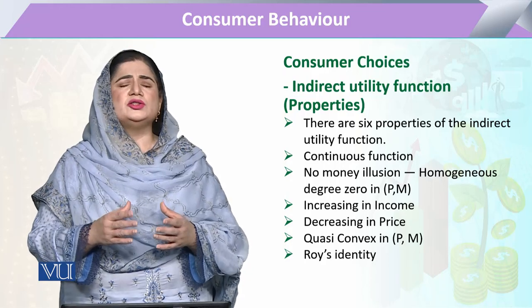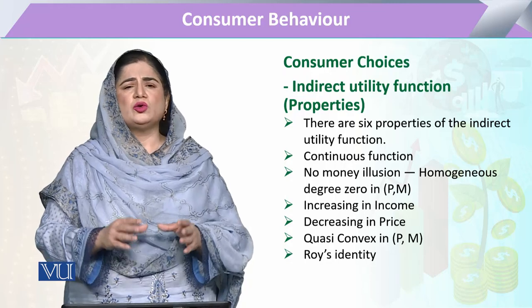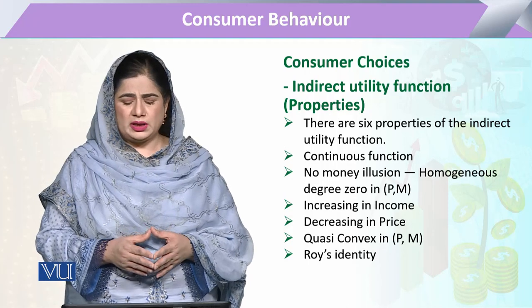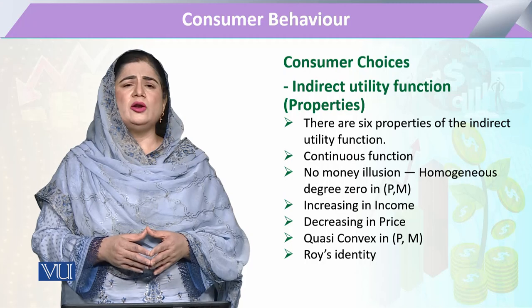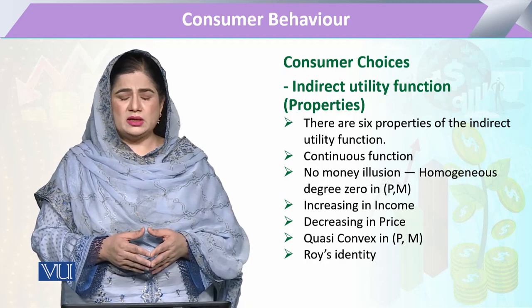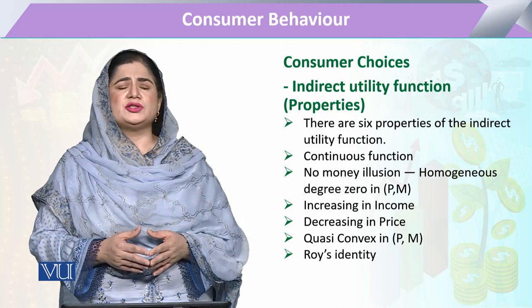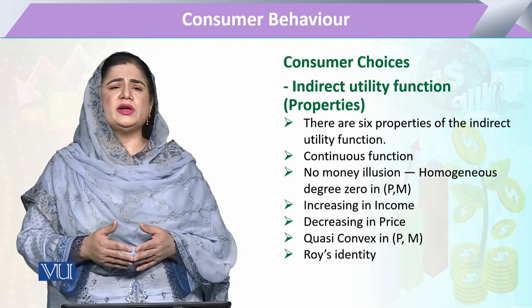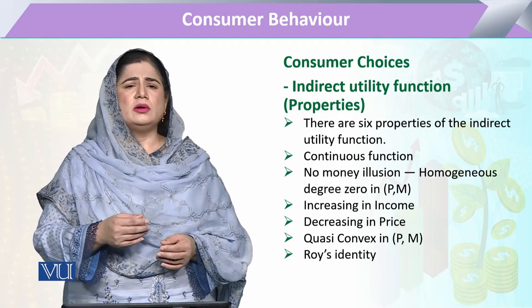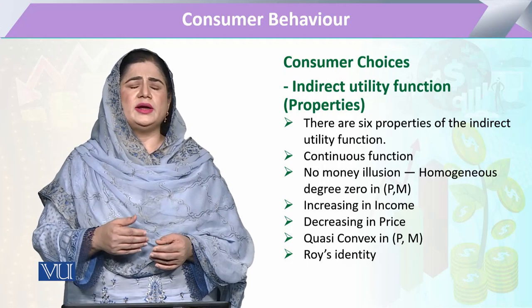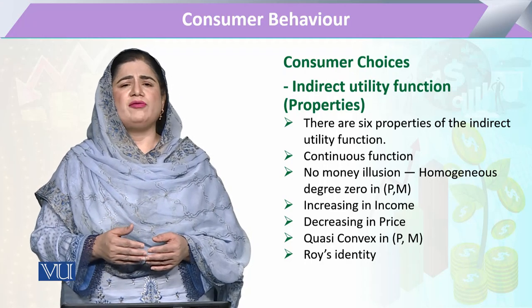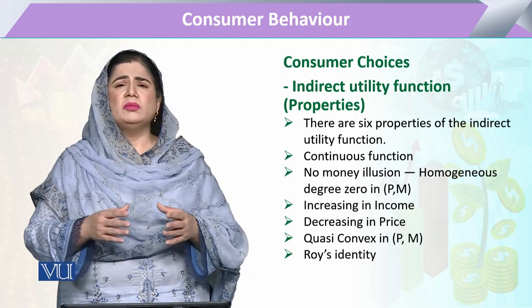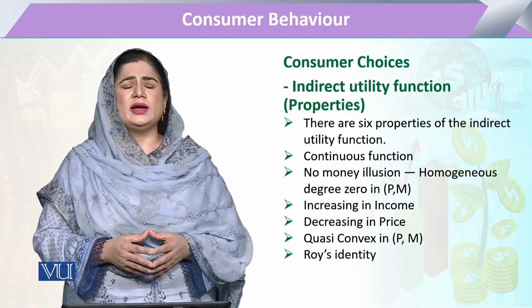To have our general conclusions, indirect utility functions have some properties. The first property is that it is a continuous function with no money illusion. This means that the indirect utility function is homogeneous in terms of money income. If there is an increase in income, the indirect utility function will be increasing. For prices, the indirect utility function will have a decreasing response, and it must have a quasi-concave form, and then Roy's identity.